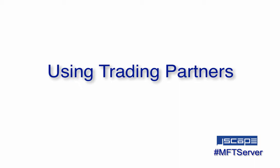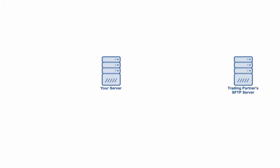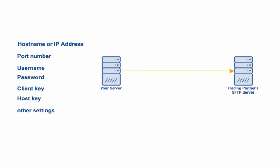Here you'll learn how to gather remote host credentials into a single entity, which you can later on reuse every time you need to construct another automated process. First let me explain the problem. Let's say you carry out transactions with a trading partner through the SFTP protocol. Whenever you establish an SFTP connection, you need to specify credentials including your trading partner's hostname or IP address, the port number, username, password, a client key, a host key, and so on.